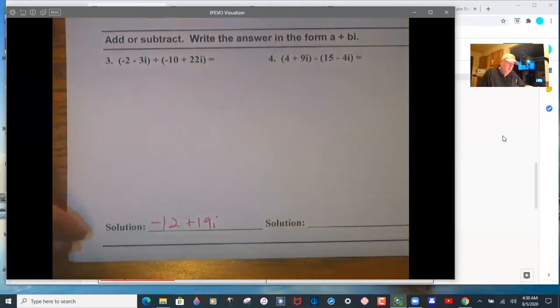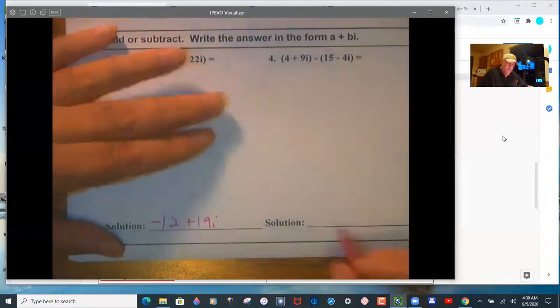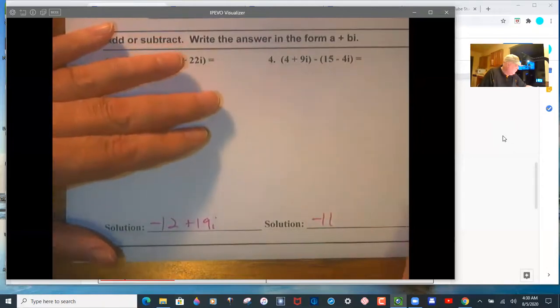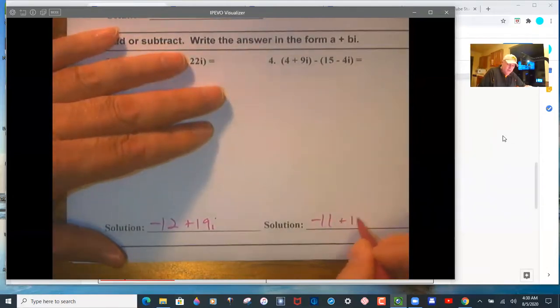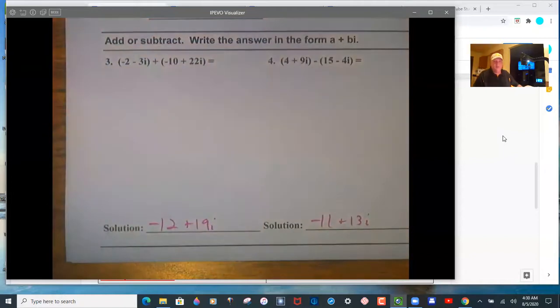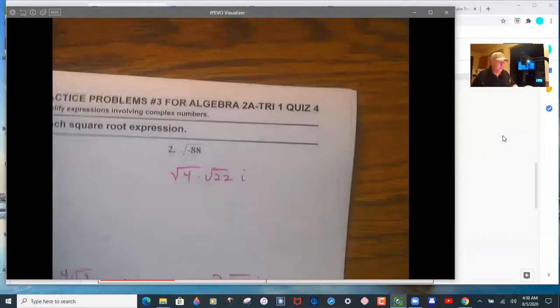Number 4, negative 11, 4 minus 15, and then 9i plus 4i is 13i. So run that negative through there. Don't forget to distribute. Pretty easy problem. That's why they are tier 1.